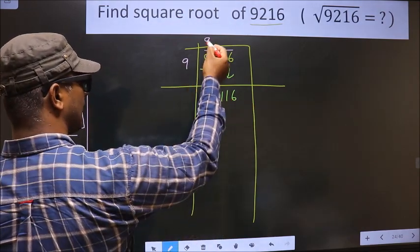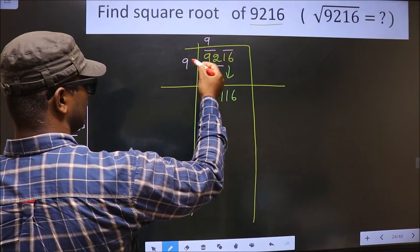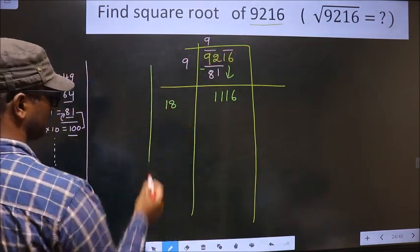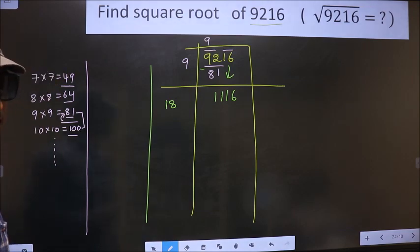Here we should add these two numbers, that is 9 plus 9, 18. Okay, now.